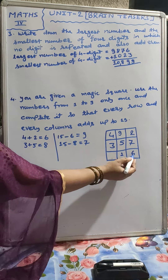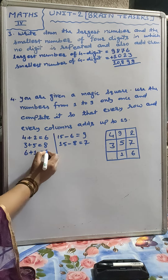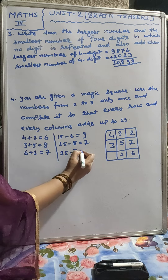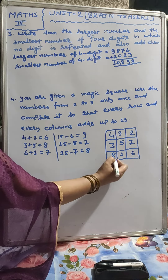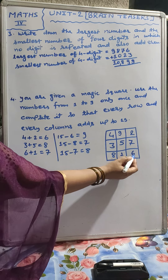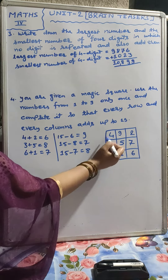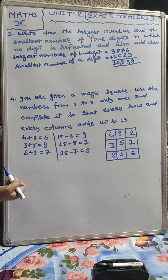6 plus 1 is 7, and 15 minus 7 is 8. We write 8 here. Checking: 8 plus 1 is 9, plus 6 is 15. There is no repetition of any digit here. That's all for this question.